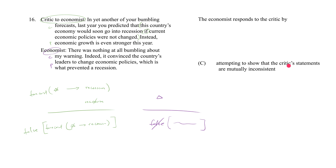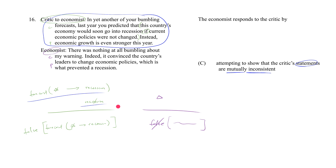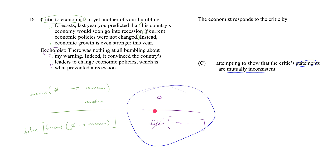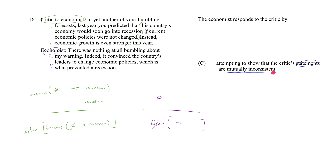Answer choice C says: 'attempting to show that the critic's statements are mutually inconsistent.' Mutual inconsistency means contradiction — you take the critic's statements and show that at least two of them contradict each other. But the economist doesn't do that. The economist doesn't say 'you claimed this and then claimed that, and those two things contradict each other.' That's not how the economist responds, so C isn't right.